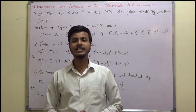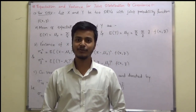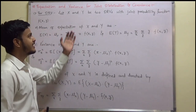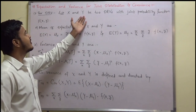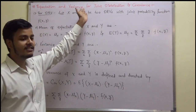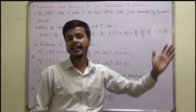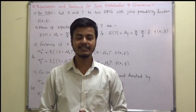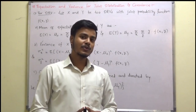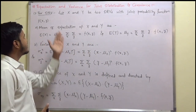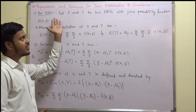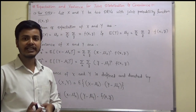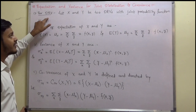Hello and welcome to this learning video. In this learning video, we are going to talk about the definition for expectation and variance for joint distribution, and with the help of that, we are going to define the covariance. So let us first of all define expectation and variance for joint distribution for the discrete random variable.